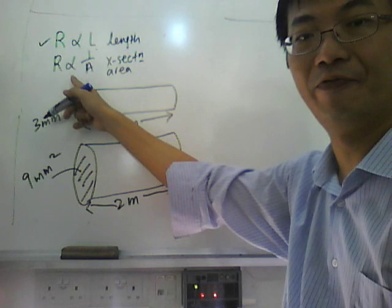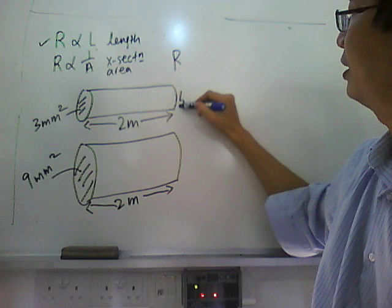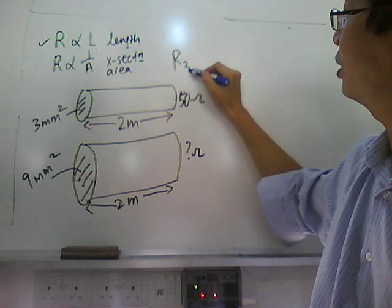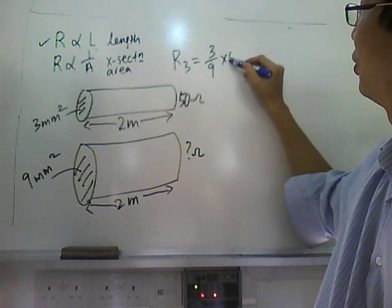Because this relationship is an inverse relationship, when the area multiplied by 3, the resistance will have to divide by 3. The working will be as such. If this is 50 ohm, what is the resistance here? R3 will be equal to 3 over 9. Take note, it's not 9 over 3. Because it's inverse, it must be 3 over 9 times 50 ohm.